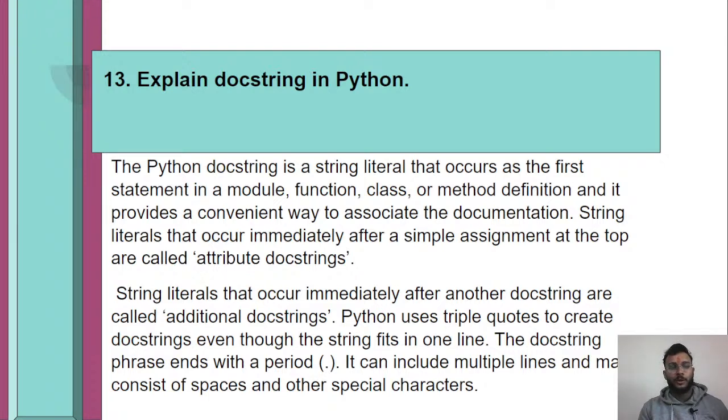The Python docstring is a string literal that occurs as the first statement in a module, function, class, or method definition, and it provides a convenient way to associate documentation. String literals that occur immediately after a simple assignment are called attribute docstrings.